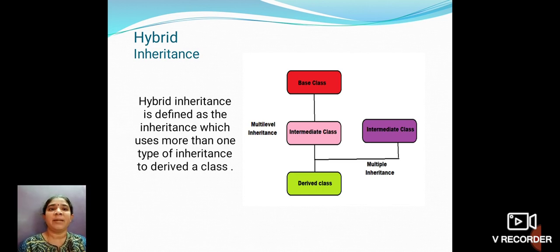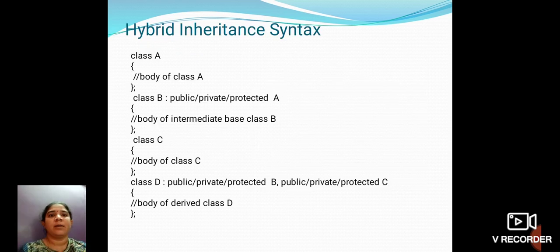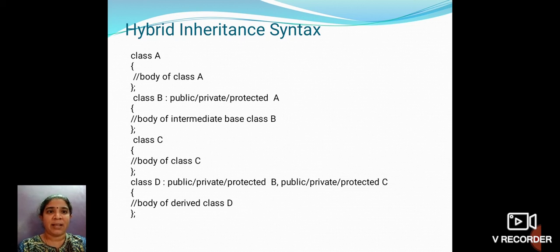Hybrid inheritance is defined as an inheritance which uses more than one type of inheritance to derive a class. This hybrid inheritance is a combination of multi-level inheritance and multiple inheritance. In the general syntax, class A is the base class, class B is the intermediate base class, class C is a derived class, and class D is a derived class inherited from both classes B and C.